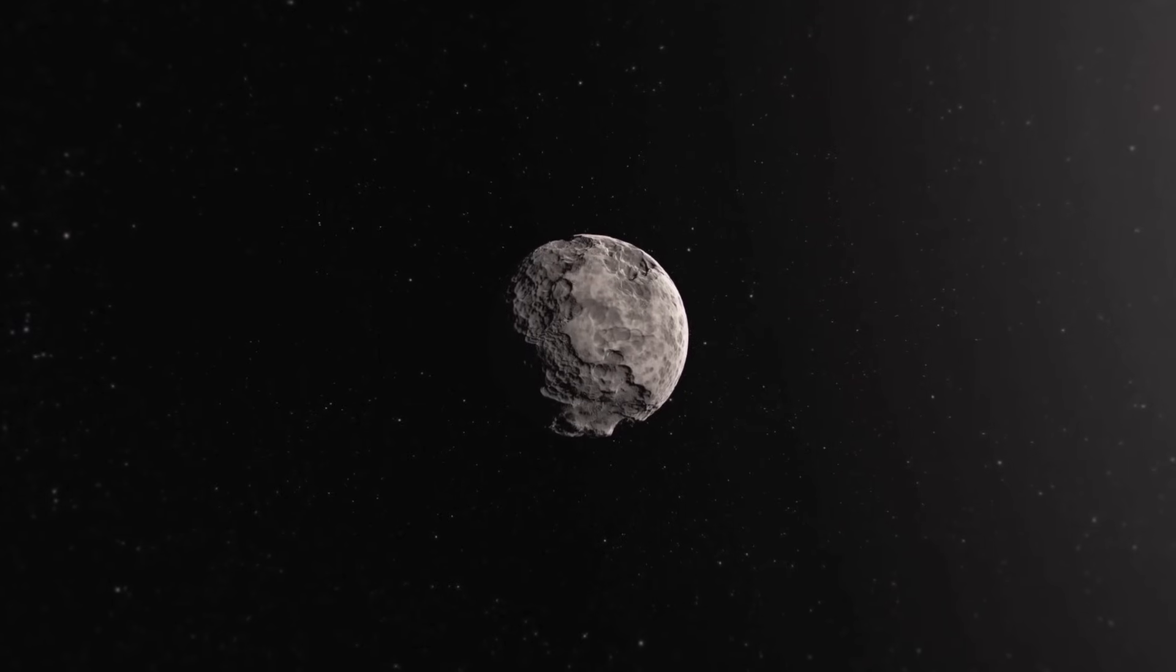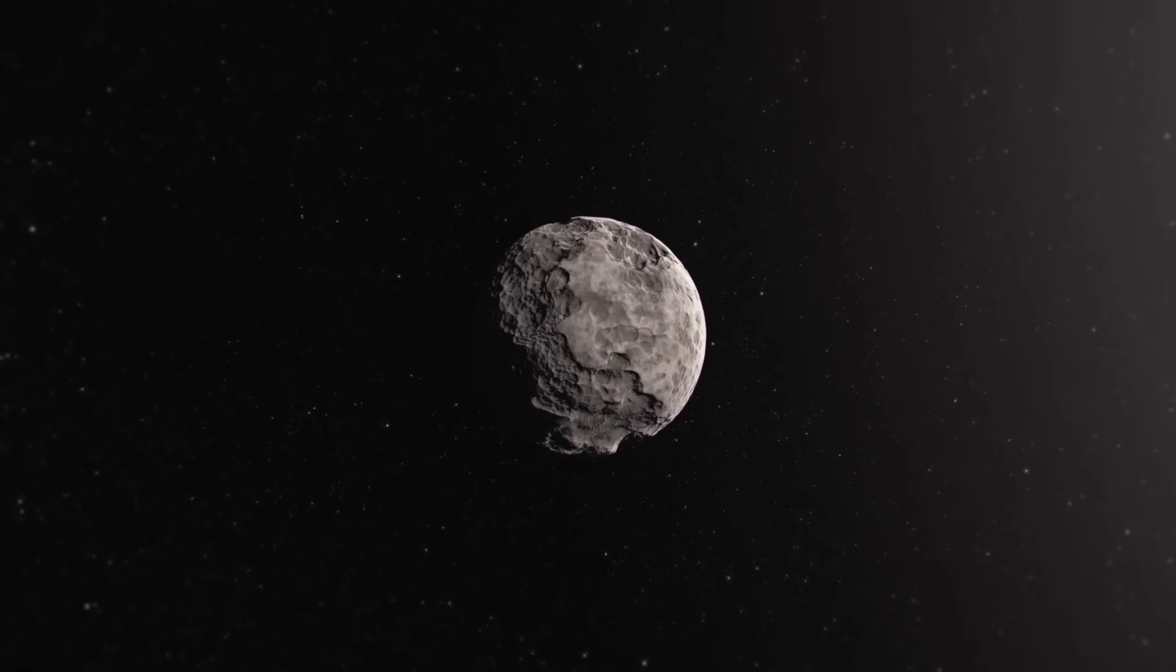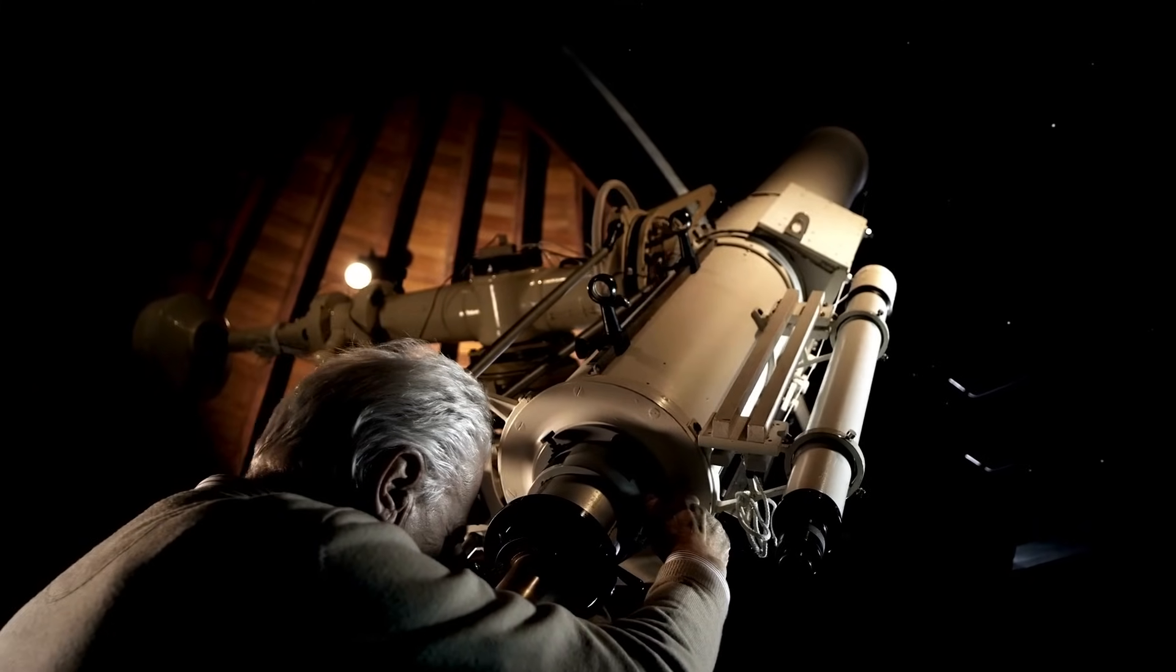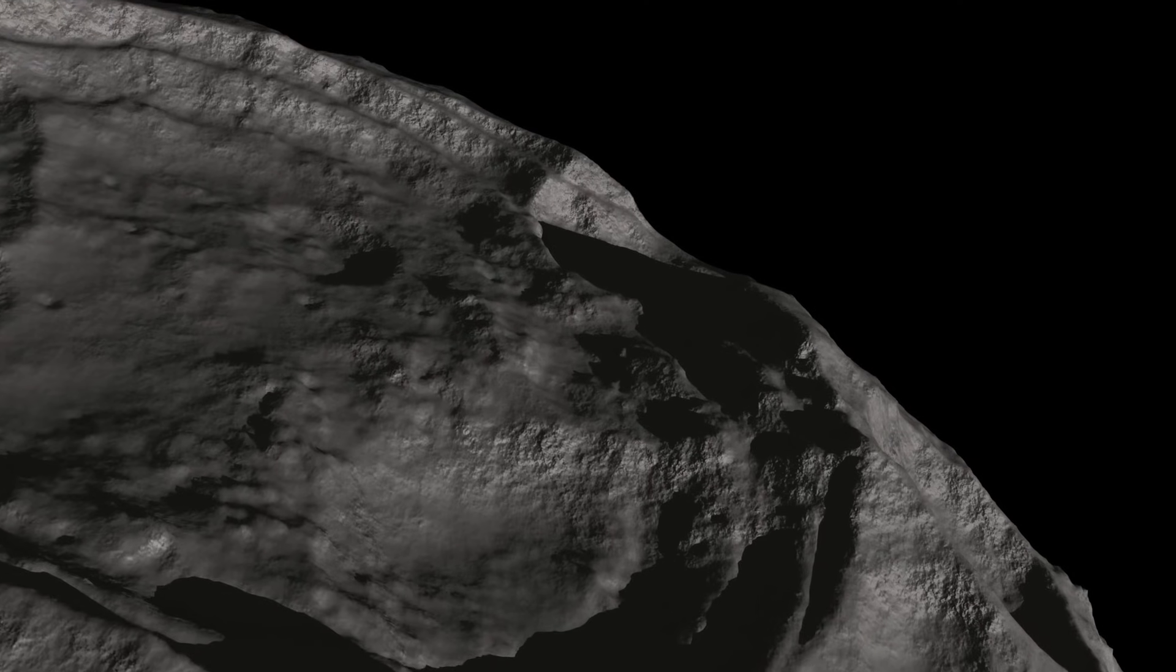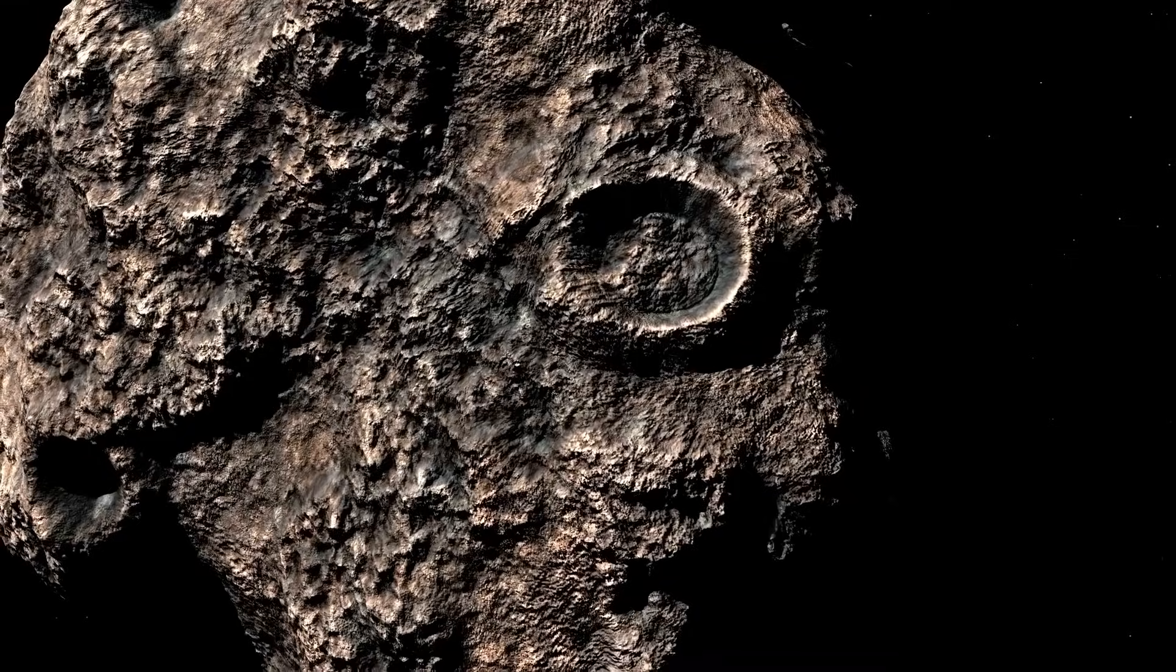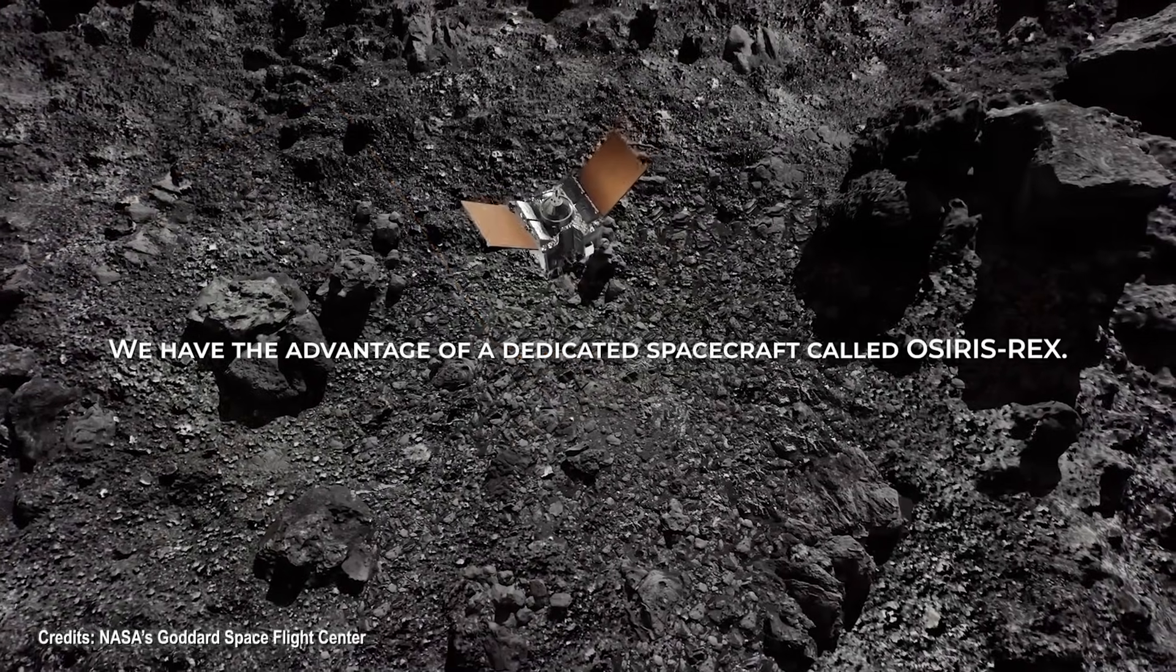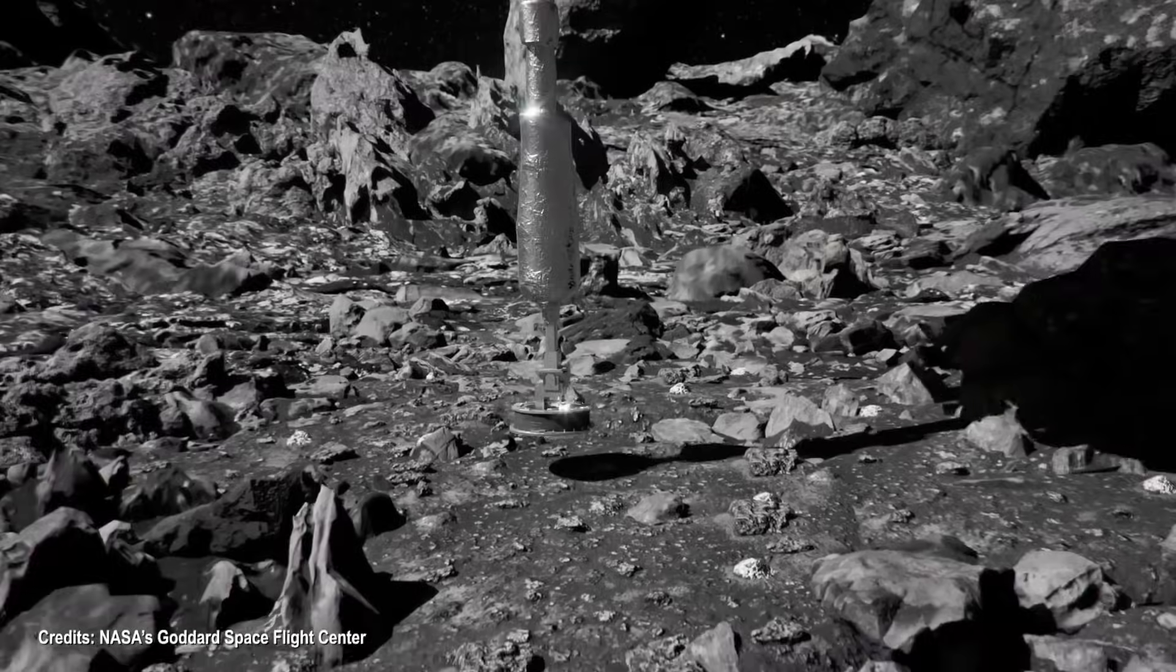The close approach of Apophis in 2029 presents a remarkable scientific opportunity. Through the use of optical and radar telescopes, we will be able to observe the asteroid in great detail, possibly even capturing surface features as small as a few meters. This will provide valuable information about the shape of Apophis. Additionally, we have the advantage of a dedicated spacecraft called OSIRIS-REx, which will closely approach Apophis.